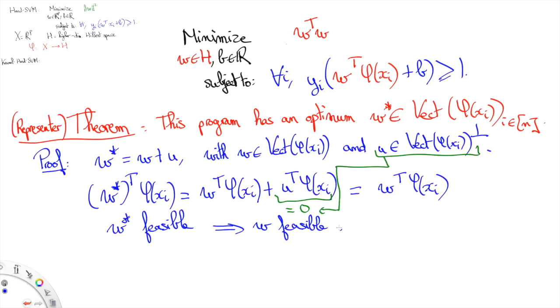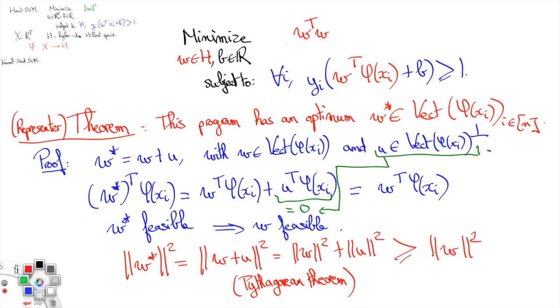But then using the Pythagorean theorem, you also know that W star squared is equal to W plus U squared, which is equal by the Pythagorean theorem to W squared plus U squared, and thus this is going to be at least W squared, which proves that